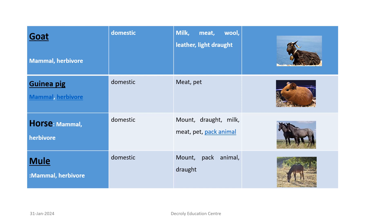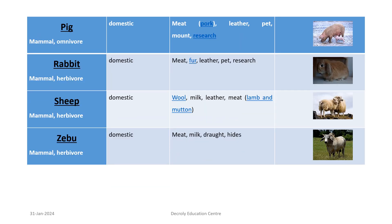Mule: mammal, herbivore; domestic. Commercially used for mount, pack animal, and draught. Pig: mammal, omnivore; domestic. Commercially used for meat (pork), leather, pet, mount, and research.